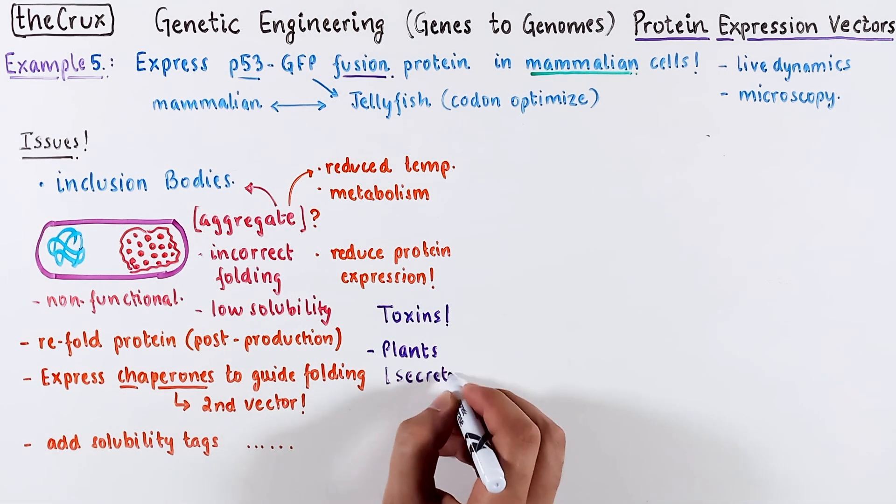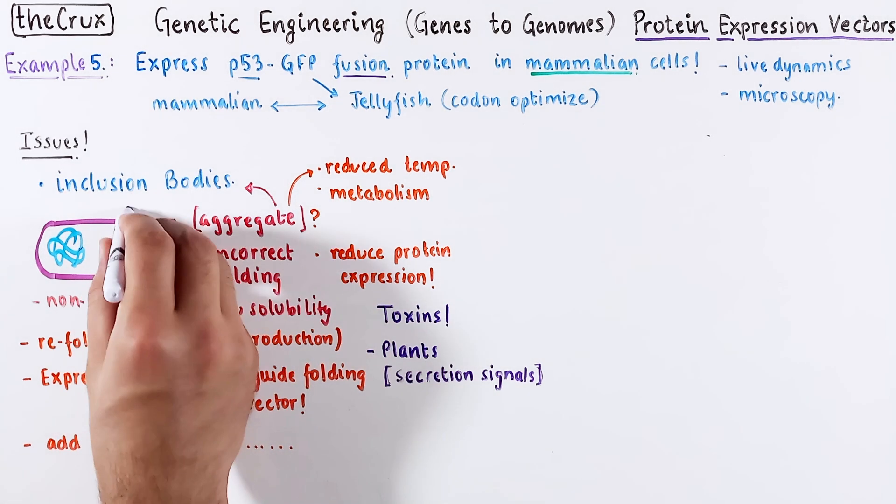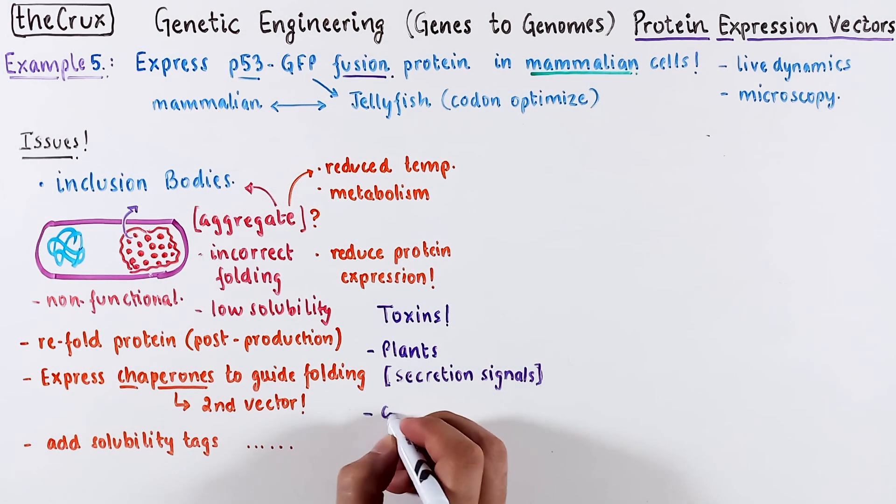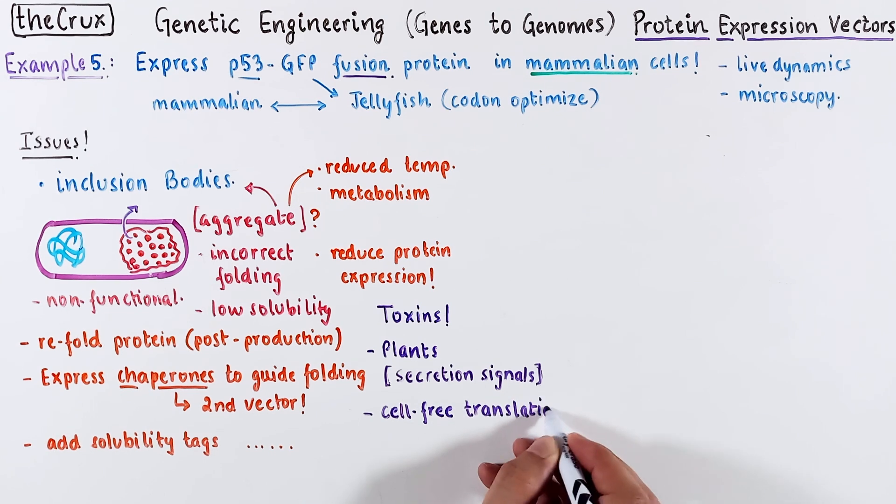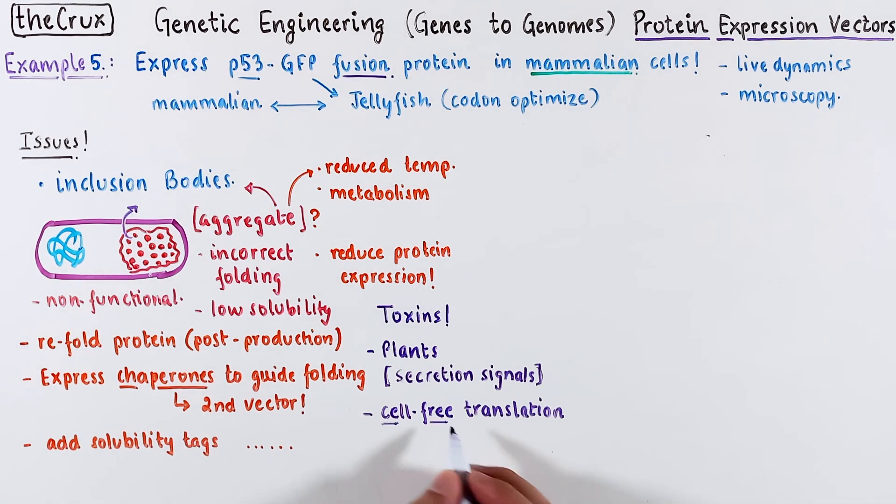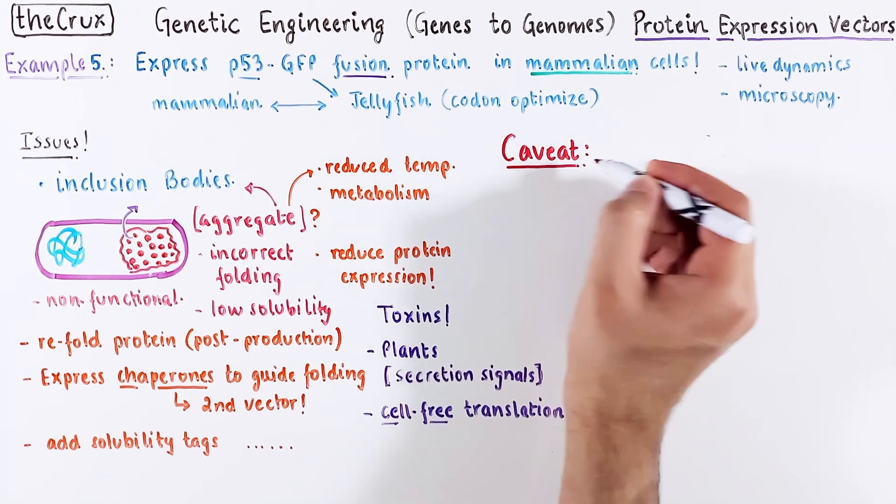Toxins are generally expressed as secreted proteins. You can't expect an expression host to live a healthy life when expressing a deadly protein. Or just don't use cells at all. That is an expensive way to make proteins, though. This discussion has some caveats, and here's a big one.